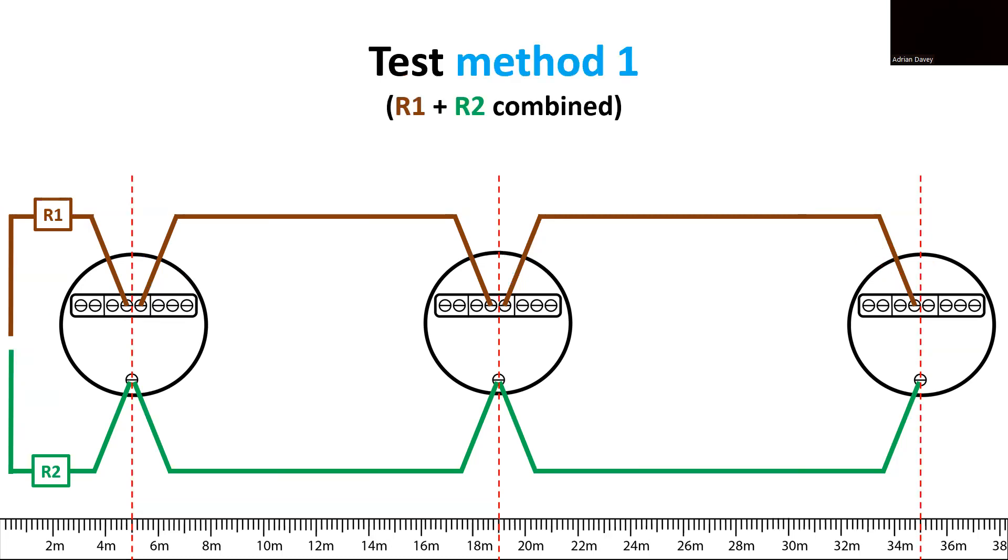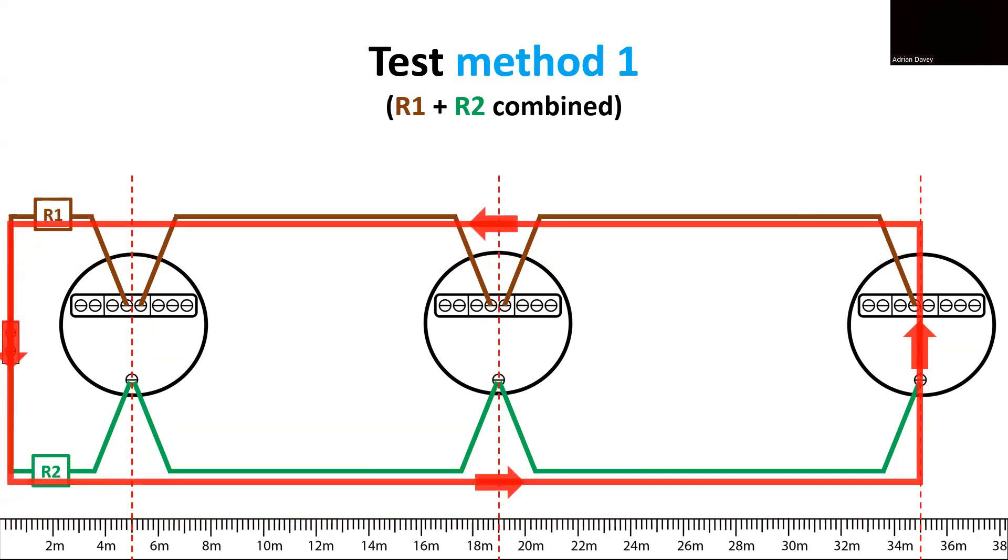For the low resistance tests, we'll be using test method 1, which allows us to measure and confirm both the R1 and R2 conductors simultaneously. It's like getting two tests for the price of one. We connect them together at a connector block at the supply end of the circuit, and then when we test between the line and CPC at any point in that circuit, we establish a probe loop, which verifies that segment of the circuit. Since we'll be conducting tests at each light point, we'll create three loops: here, here, and here.